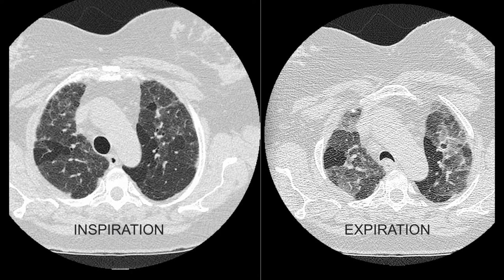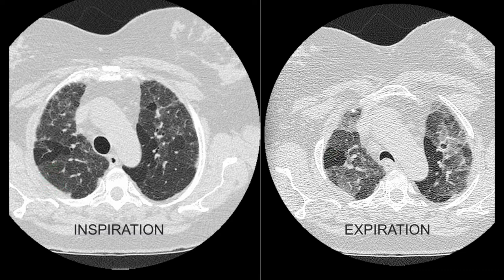This is a case of hypersensitivity pneumonitis. Note on expiration, the posterior tracheal wall falls inwards because it does not have a cartilage skeleton. During expiration, the diameter of the trachea reduces and the posterior wall falls in. The black area — the area of mosaic reduced attenuation — is exacerbated during expiration, whereas the normal lung density tends to become more grey during expiration.